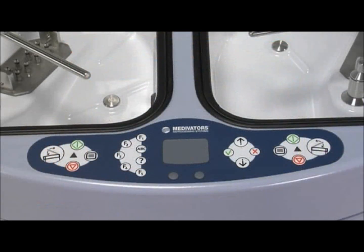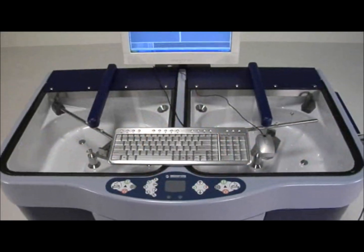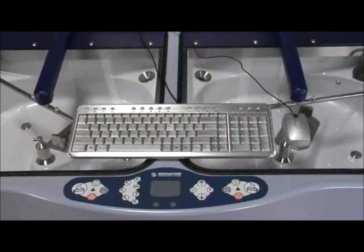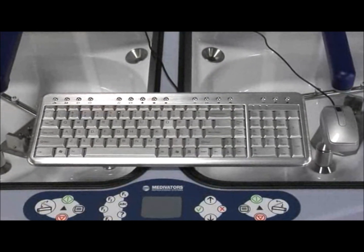The control panel consists of function keys, selection buttons, and a touchpad and mouse buttons. A keyboard and mouse are also supplied with the Advantage Plus and can be connected for use when entering user information.